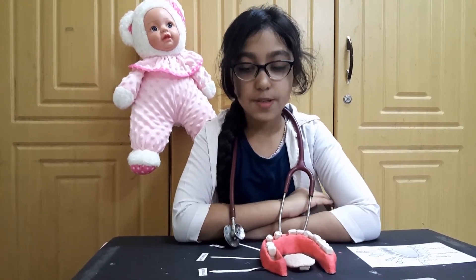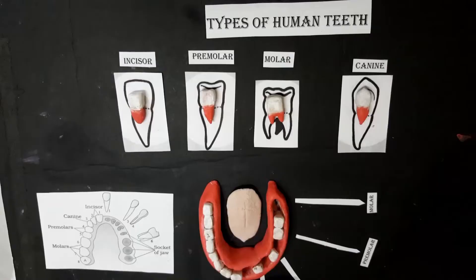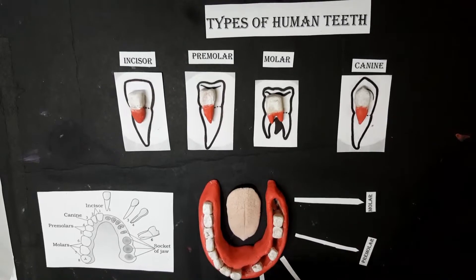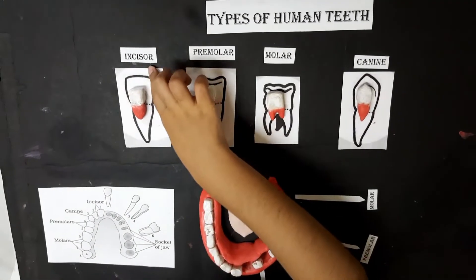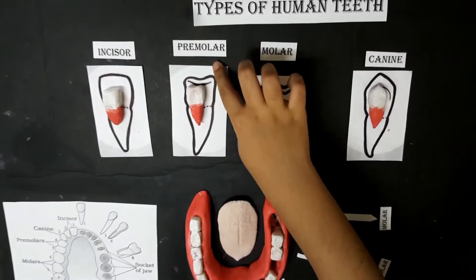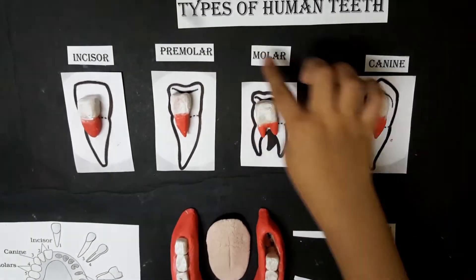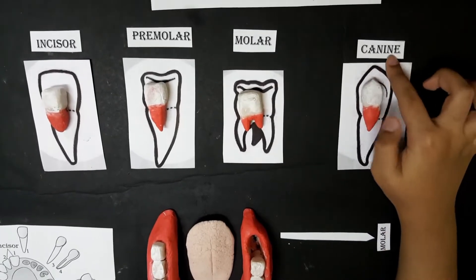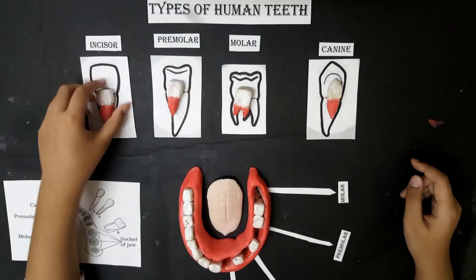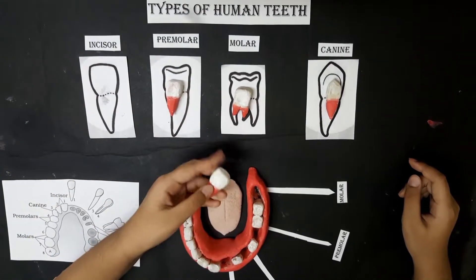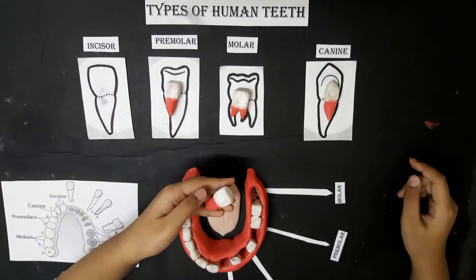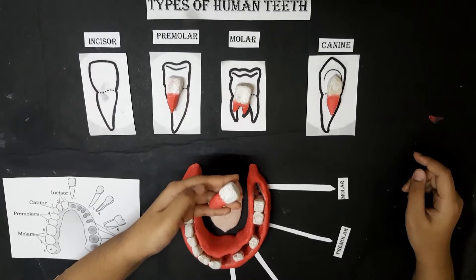Welcome back. Today I'm going to tell you about the types of teeth. There are four types of human teeth: incisors, premolars, molars, and canines. This is an incisor — they are large and strong.